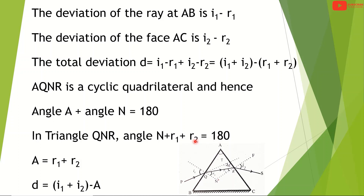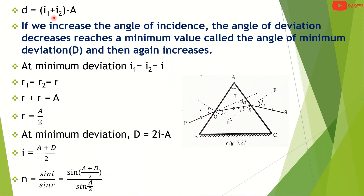Comparing equations: angle A plus angle N equals 180, and angle N plus R1 plus R2 equals 180. Therefore, A equals R1 plus R2. Substituting into the deviation equation: deviation D equals i1 plus i2 minus A.